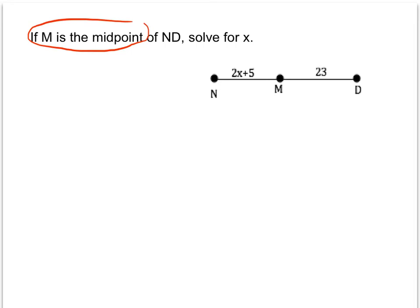If this segment ND has M as the midpoint, that just means that segment NM and segment MD are equal in measure. And we can say they're actually congruent. We could say NM is congruent to MD.